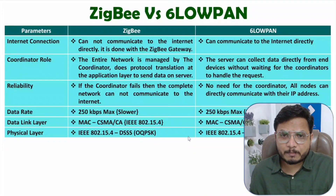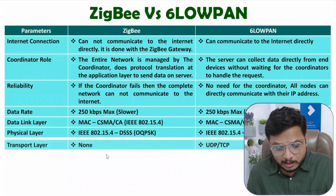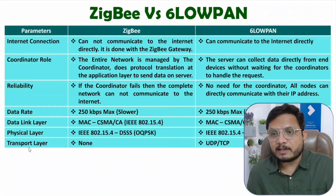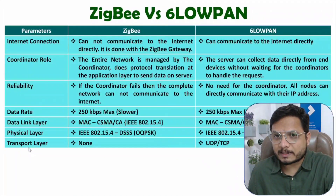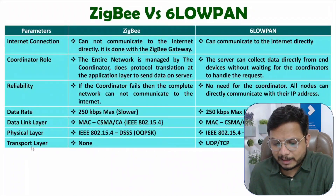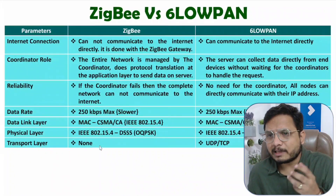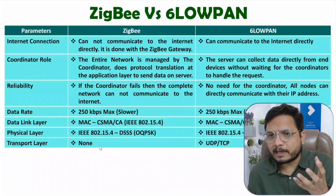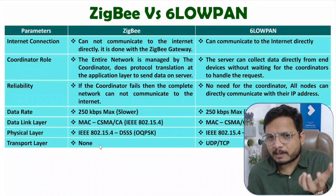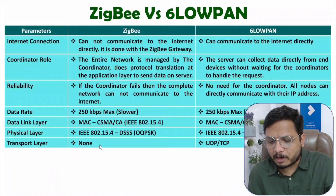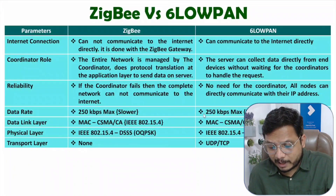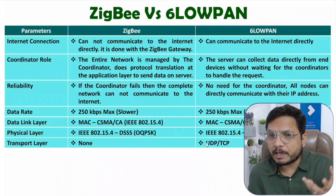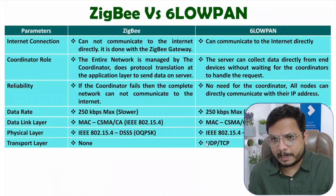The next parameter is the transport layer. At the transport layer in ZigBee, ZigBee's own principles are applied. But with 6LoWPAN at the transport layer, you can use TCP or UDP protocol.